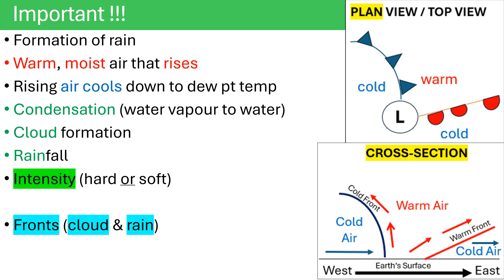An important aspect of rainfall to remember is how hard or soft it comes down. The harder rain results from the warm air rising at a rapid speed, but that rising air also cooling down very quickly. Your softer rainfall results from slow rising of that warm air, accompanied by a very, very slow cooling of that rising air.